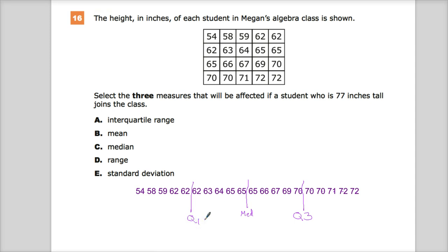So now I can start doing a few of these. Interquartile range in this case would be the average of 70 is 70, so 70 minus 62. So the interquartile range is 8. So I'm just doing 70 minus 62.